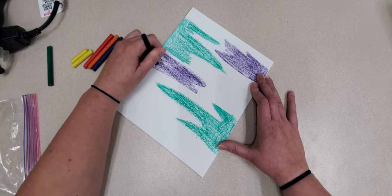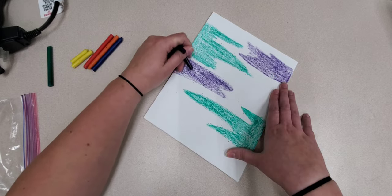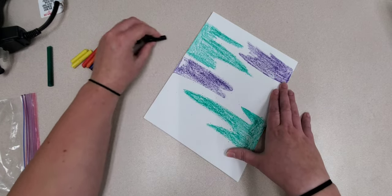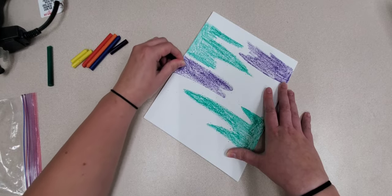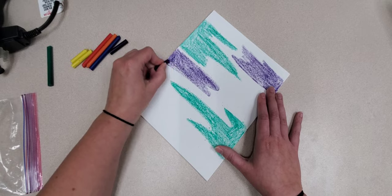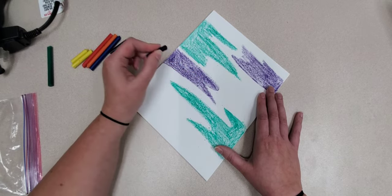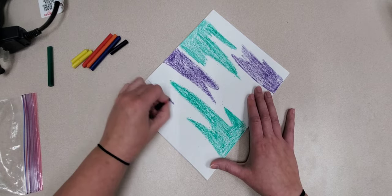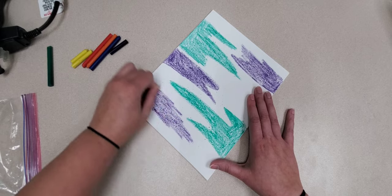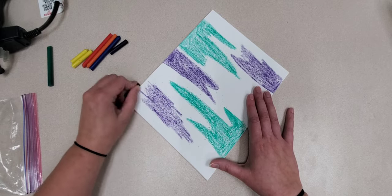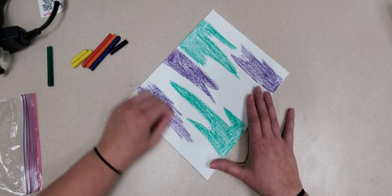Now the good thing about crayons specifically is if you get it onto your table or anything, all you need is hot water. Oops, there goes my crayon. All you need is hot water to get it off of any surface. Fun tip for parents out there listening. Let's just do a weird little cloud shape down here. It's almost easier when they're broken too to color because then you're not trying to focus on not breaking them.